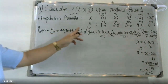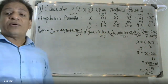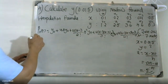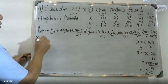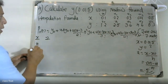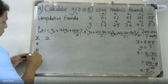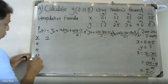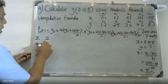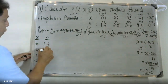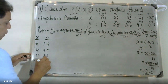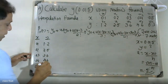We set up the difference table with x values: 0.01, 0.02, 0.03, 0.04, 0.05, and corresponding y values y0 = 1.2, y1 = 2.5, y2 = 3.6, y3 = 4.6, y4 = 5.3. We will compute Δy0, Δ²y0, Δ³y0, and Δ⁴y0.